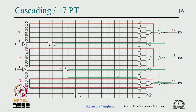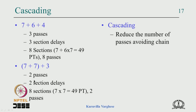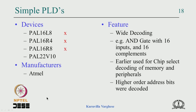With 2-pass cascading, 7×7 = 49 product terms can be implemented with only 2-pass delay. If you chain it you get 8 passes with 49 product terms, but with the 2-pass approach you get the same 49 product terms with minimal delay — that is how cascading should be done.